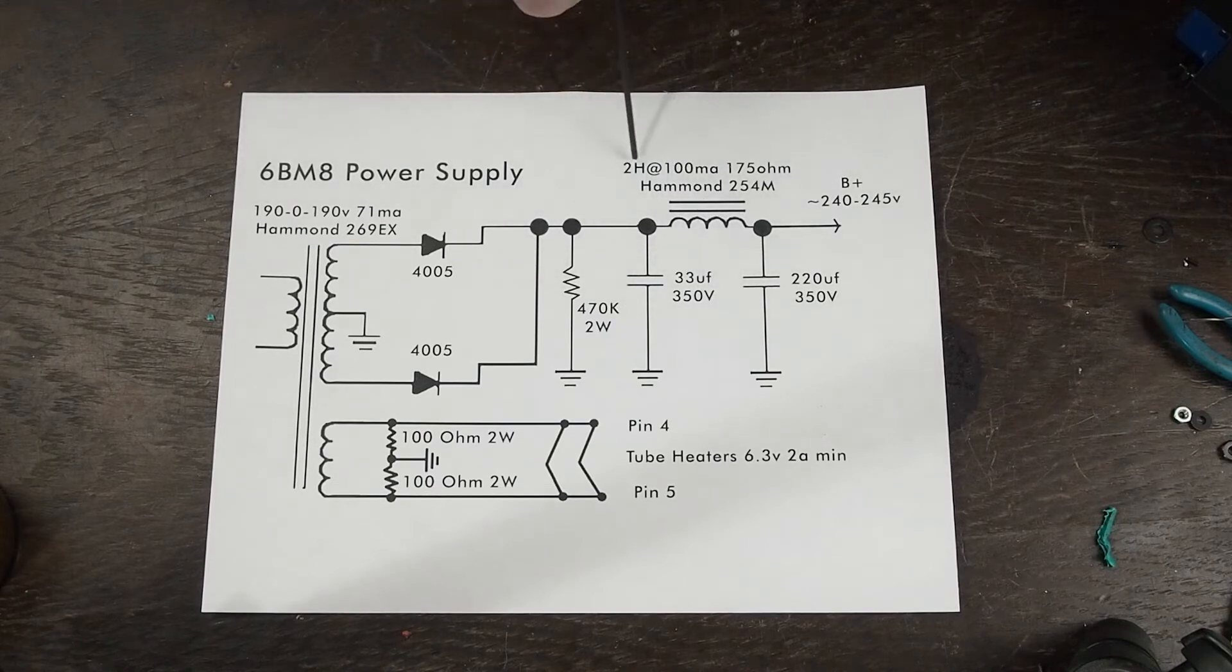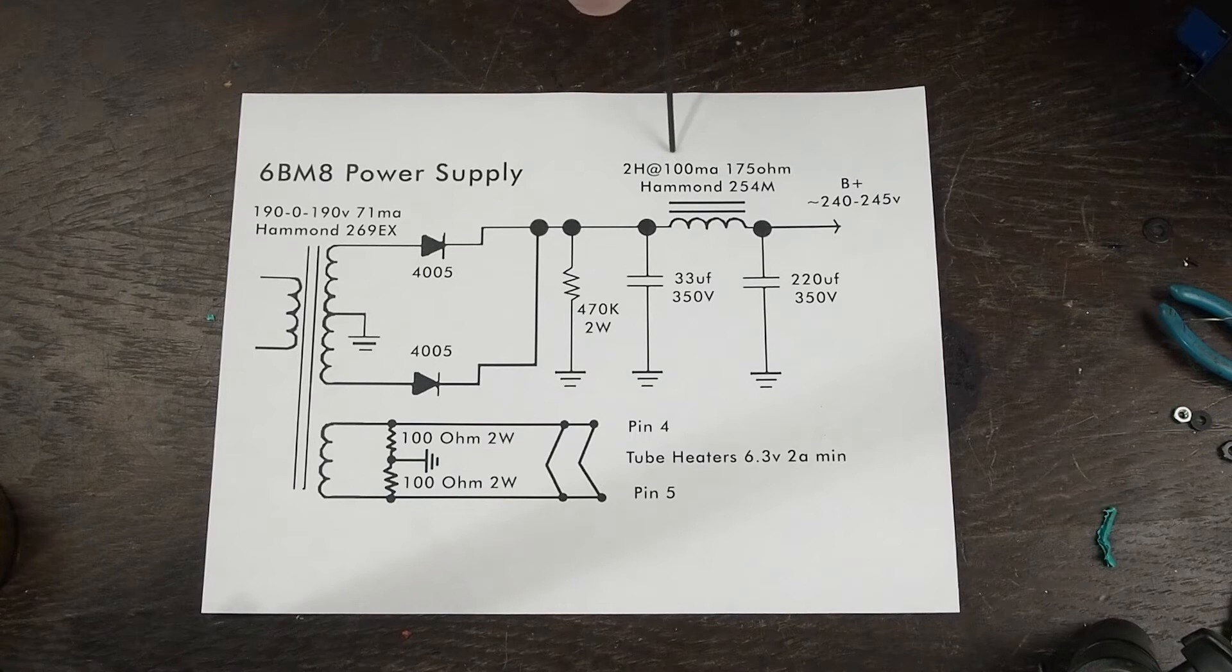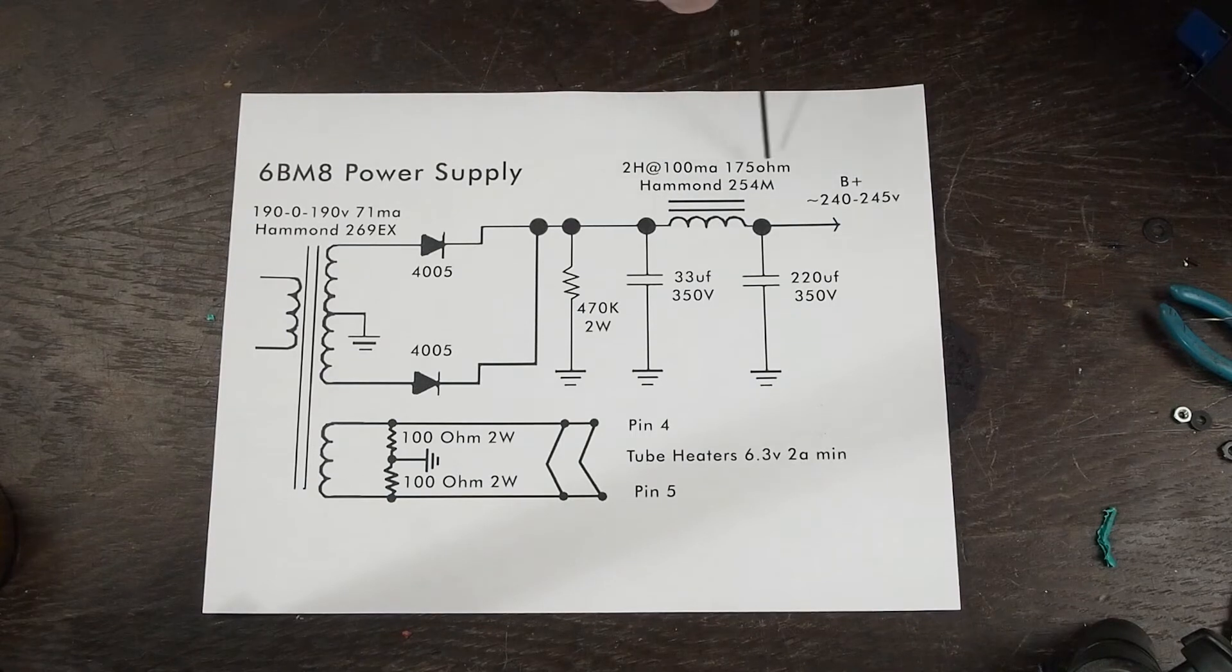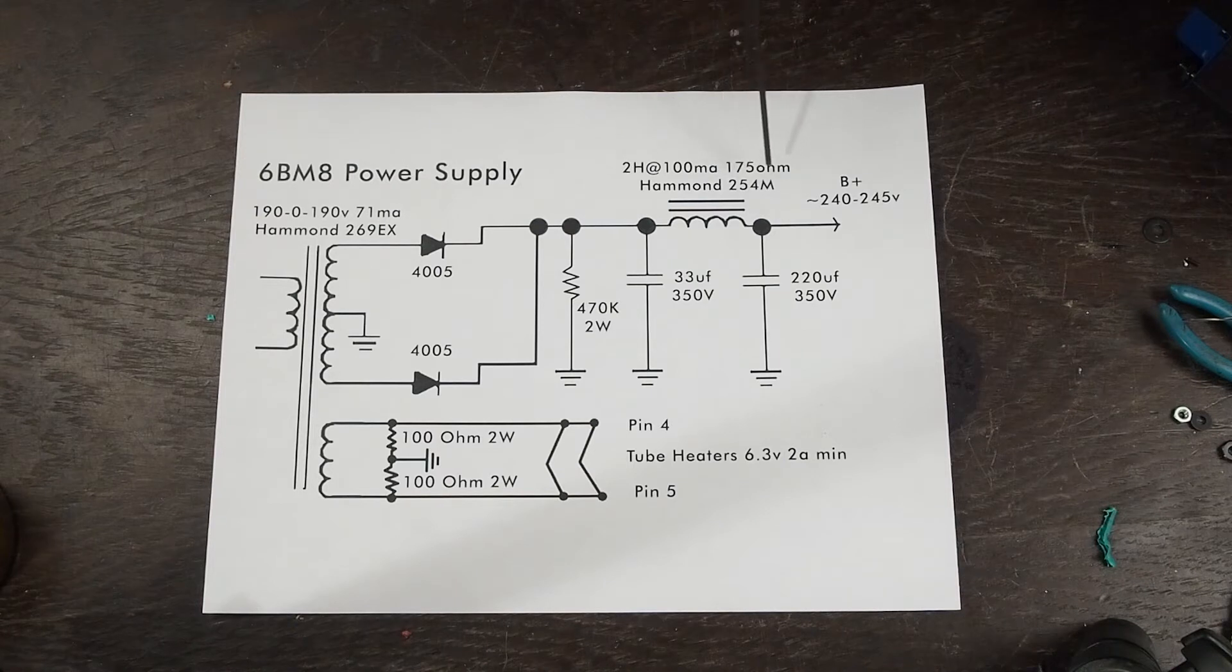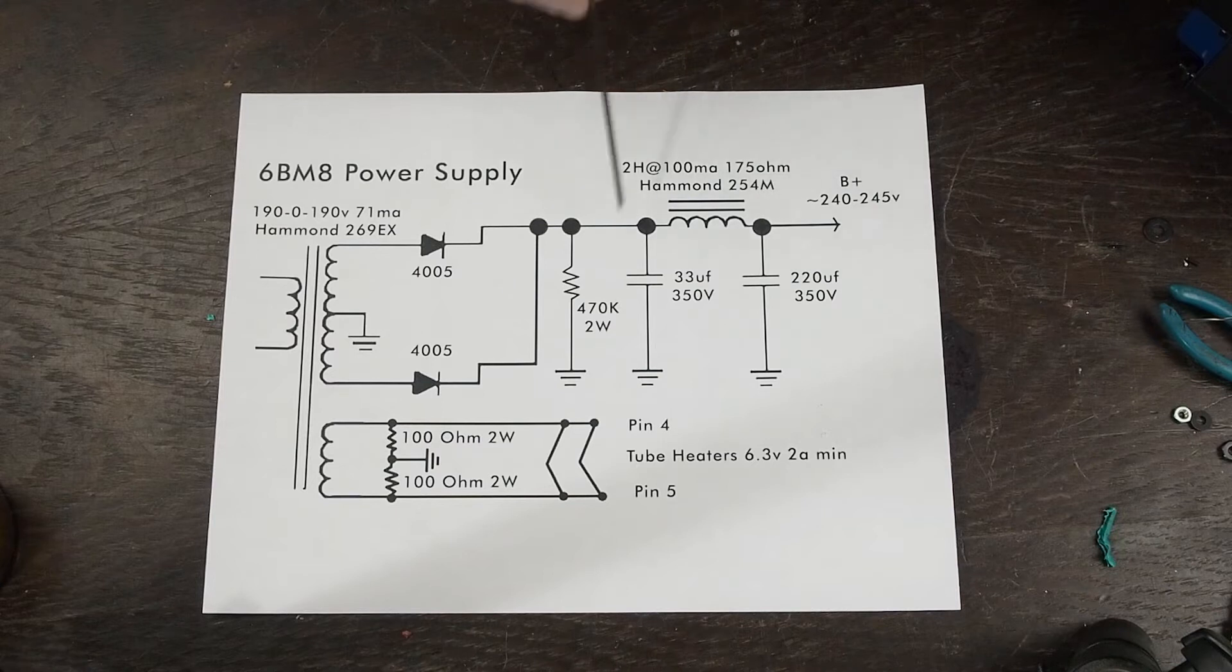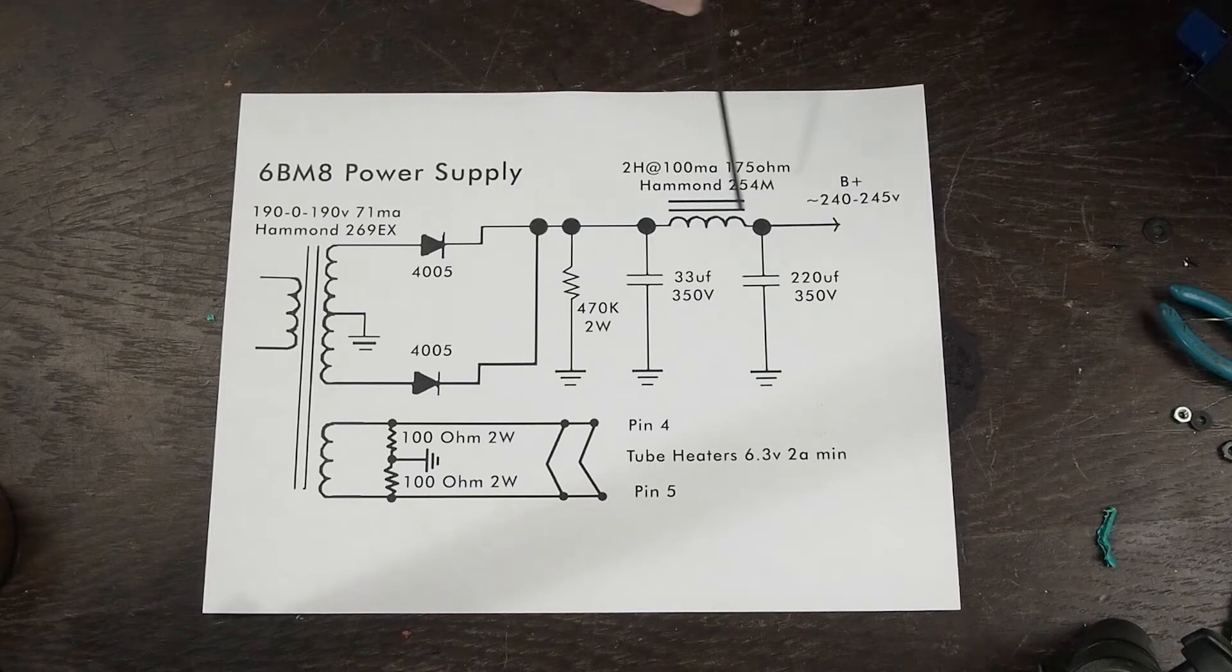The next in series is this 2 Henry 100 milliamp choke that has 175 ohms across it. And it's a Hammond 254M. This is a really small choke. It's one of the reasons we chose it. It's a little close to the edge on the voltage that it's rated at at 300 volts, but I think we'll be okay.